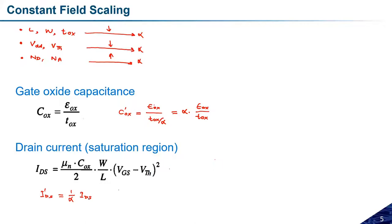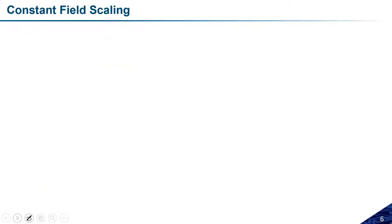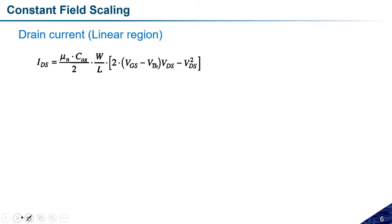Since the drain current reduces, power dissipation can also be reduced. Now for the linear region drain current: Ids = μn × Cox/2 × (W/L) × [2(Vgs − Vth)Vds − Vds²]. Applying the same scaling logic — voltages reduce by alpha, Cox increases by alpha, W/L is unchanged — we again get Ids' = Ids / α. So after scaling, the linear region drain current is also reduced by factor alpha.